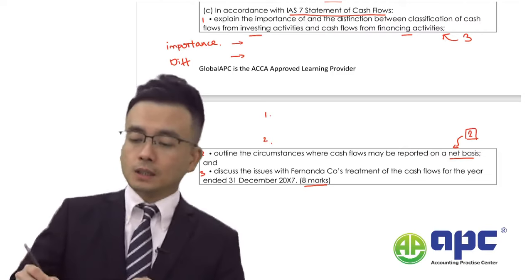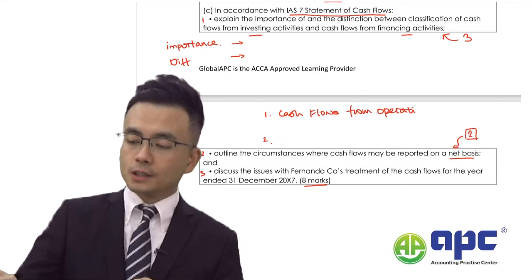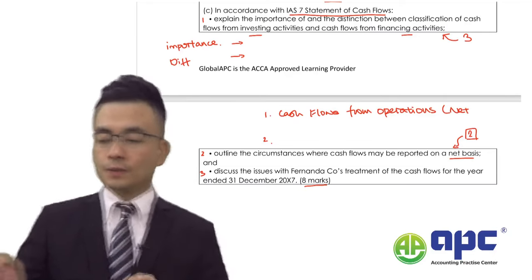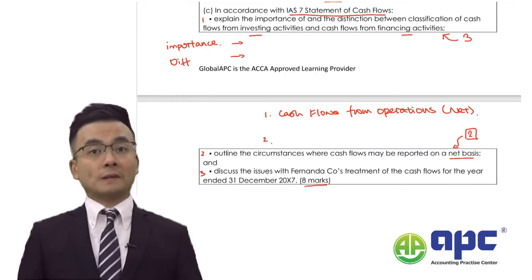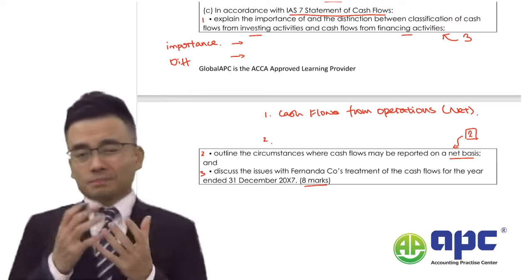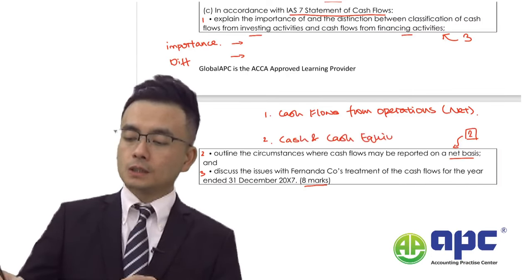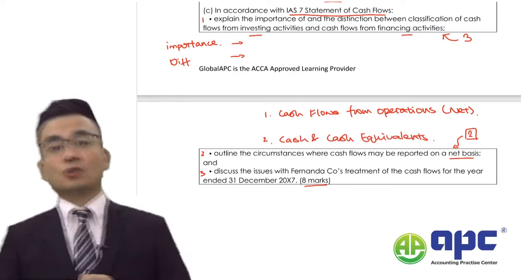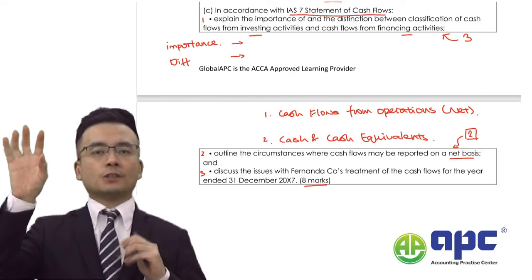Firstly, cash flows from operations — especially net cash flows from operations — will be shown on the face of the statement of cash flows on a one-line basis by netting all those cash flows together. Alternatively, cash flows may be netted — for example, cash and cash equivalents, so positive cash in current assets and overdraft in current liabilities are netted off against each other.